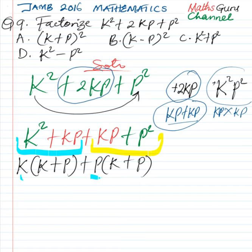k plus p. So we have it as k plus p, then we take any of the expression in the bracket, they are the same. So we have k plus p.